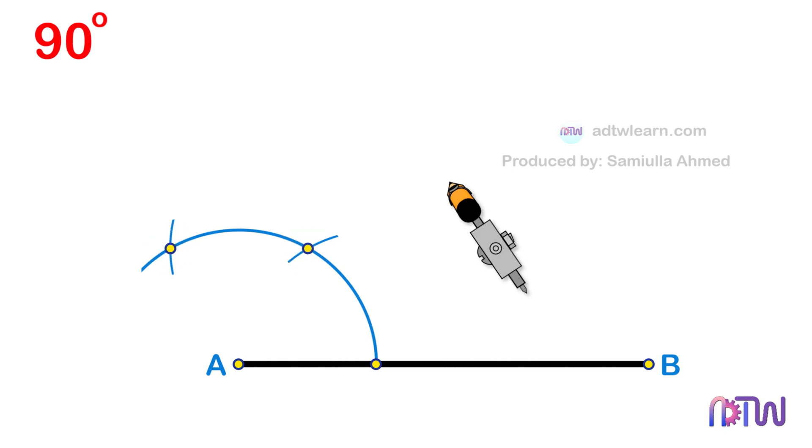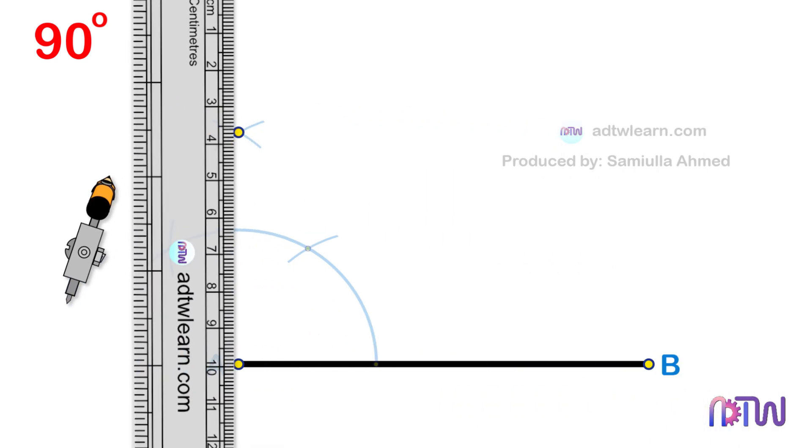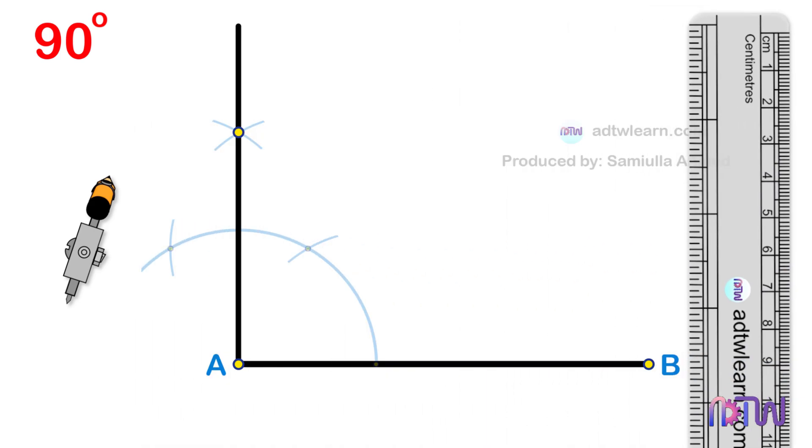Using these points as center, cut arcs as shown. Draw a line passing through this point from endpoint A of the line. This is the required 90-degree angle.